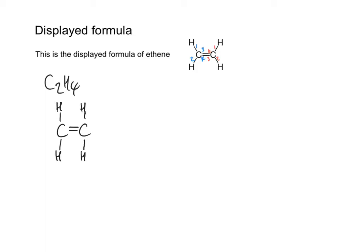If we took something a little bit more difficult, like propene — propene has the molecular formula C3H6. I'm going to start off by putting my carbon atoms in a row. Because it's an alkene, there has to be a double bond between the carbon atoms somewhere. There only has to be one double bond to make it an alkene. I'm going to put that double bond in straight away between the first two carbons from left to right.